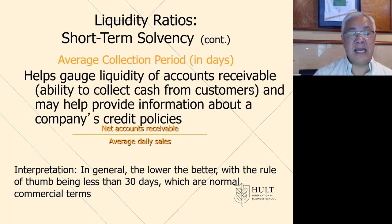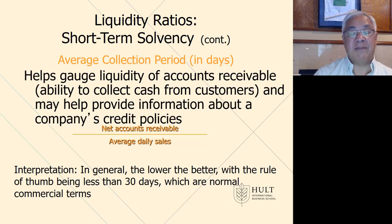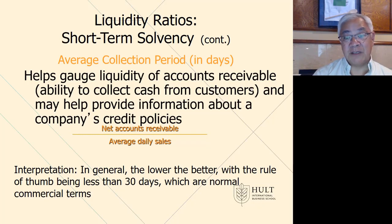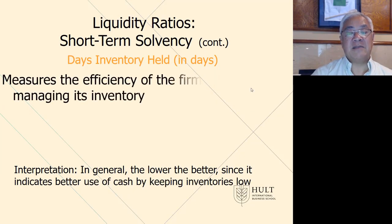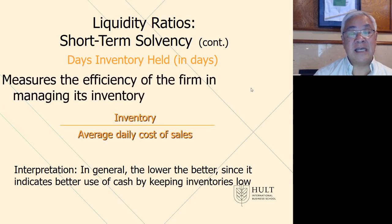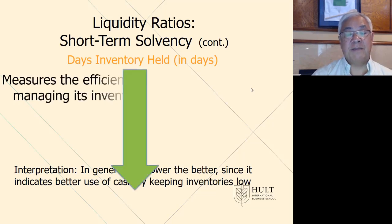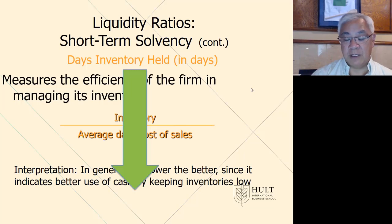Next is average collection period in days — how well are we managing collections of receivables? We take net accounts receivable and divide by daily sales. The result tells us how many days we have sitting in receivables; we want that number low — the lower the number of days, the better, meaning we collect money faster. Next is days inventory held — how long does it take to sell our inventory? We take inventory divided by average daily cost of sales. We want it down; we want to sell quickly and be very efficient.